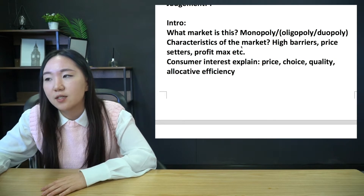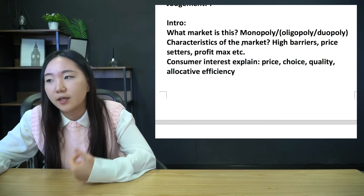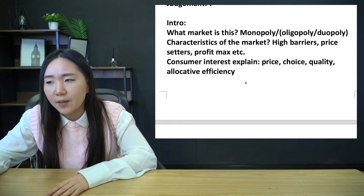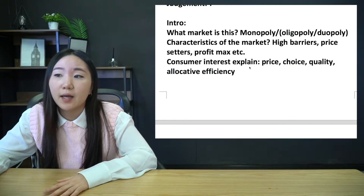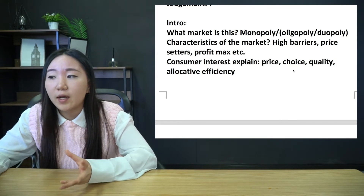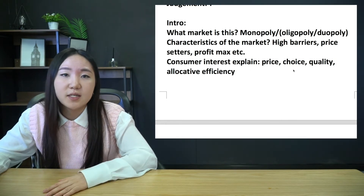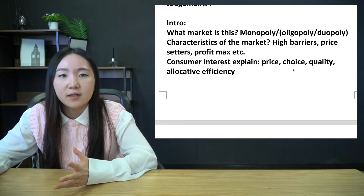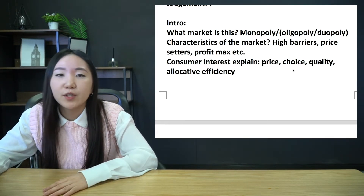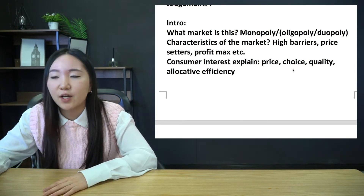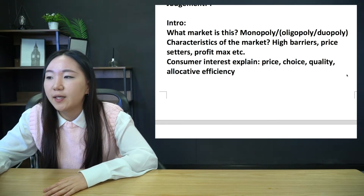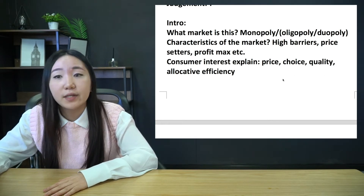So we're going to characterize the market: high barriers to entry, price-setting power, profit maximization, et cetera. And then I'm going to explain consumer interest - what do I mean by it? I mean price, choice, quality, and allocative efficiency. I might mean a couple of other things like extra good customer service or insurance, but generally speaking we're going to analyze it this way.